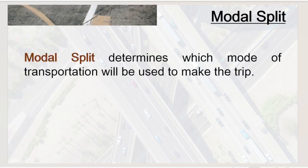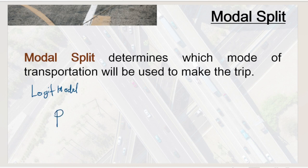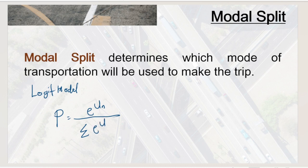What is modal split? Modal split determines which mode of transportation will be used to make a trip. From our previous discussions, I introduced the Logit Model, where the probability for modal split is equal to e raised to the utility function of the mode, over the summation of e raised to the utility functions of all modes. That utility function is expressed in terms of variables or factors.